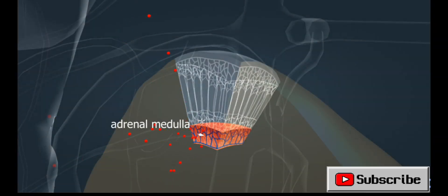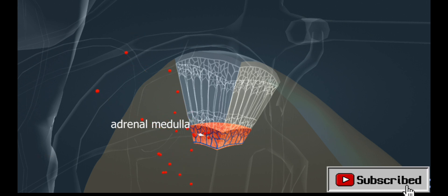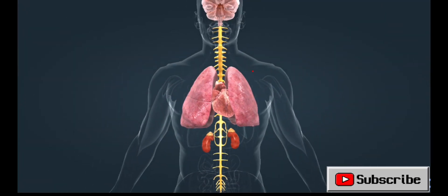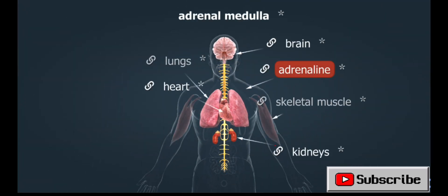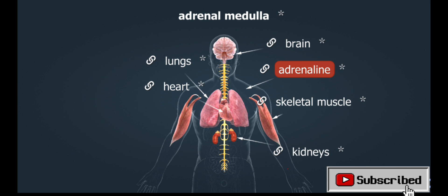The adrenal medulla is part of the sympathetic nervous system. The hormone-secreting cells of the adrenal medulla are neurons that have lost their axons and release hormones directly into the bloodstream. The most important hormone secreted by the adrenal medulla is adrenaline.